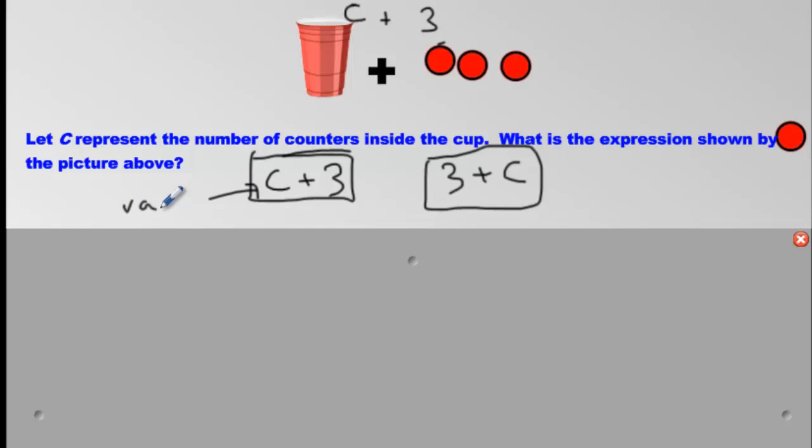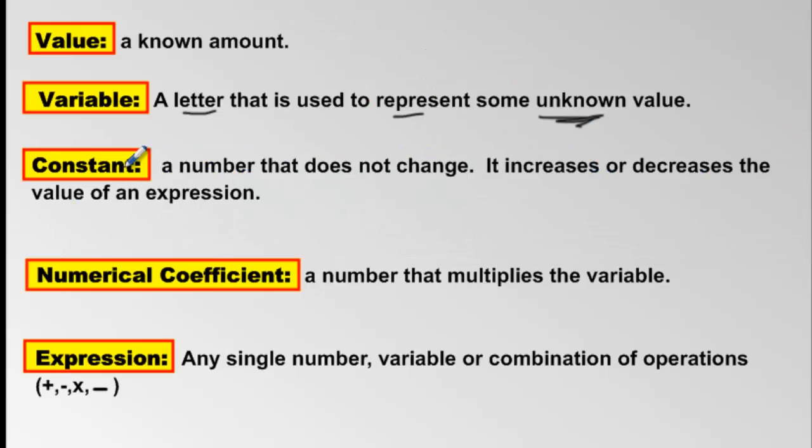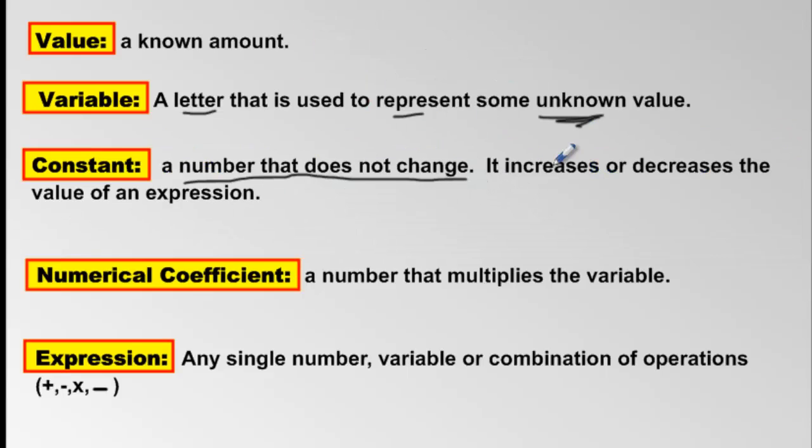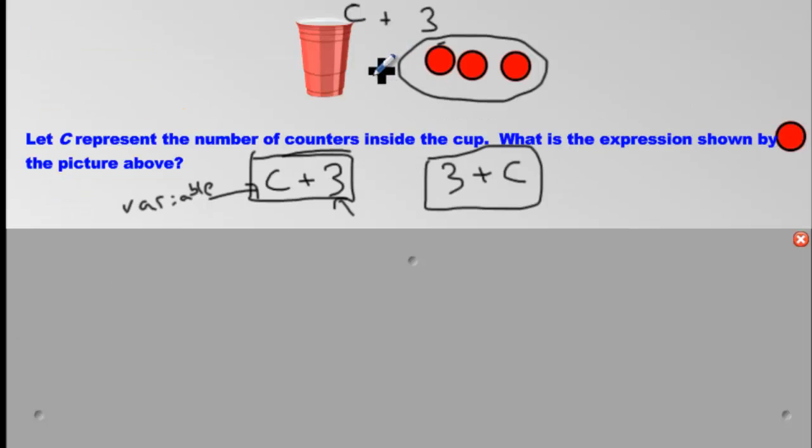Before we move on, remember what this is called? The variable. If you see a letter, you know you've got a variable. How about that plus 3? These 3 here, they don't change. They increase the amount of marbles. We call them constant. It's a number that does not change. They increase the value of the expression. So we call this plus 3 a constant.